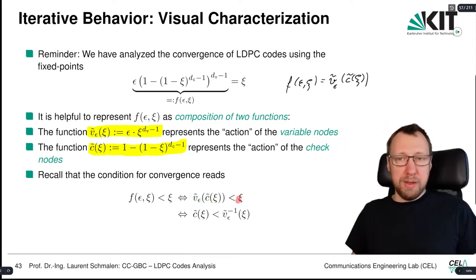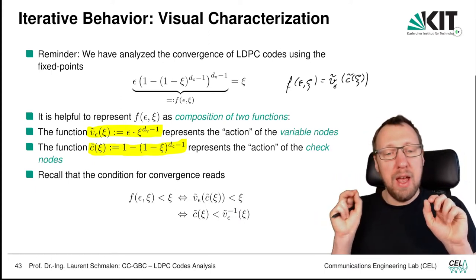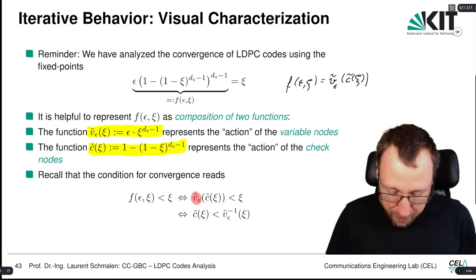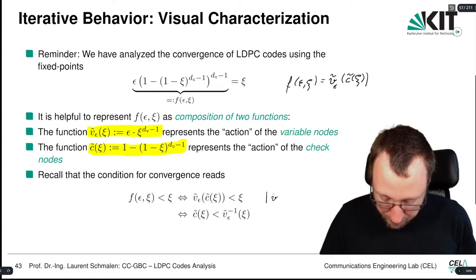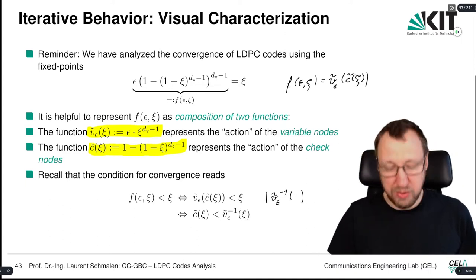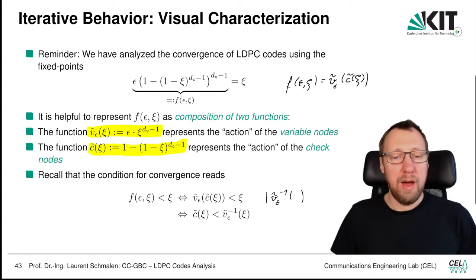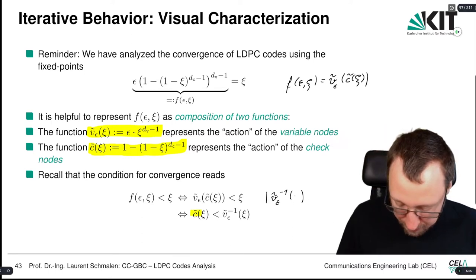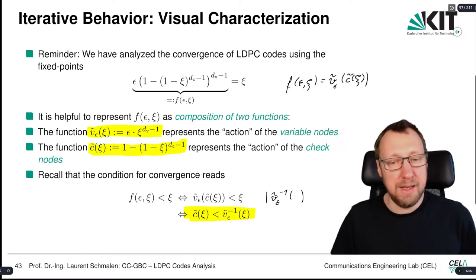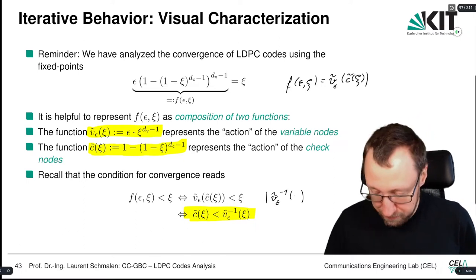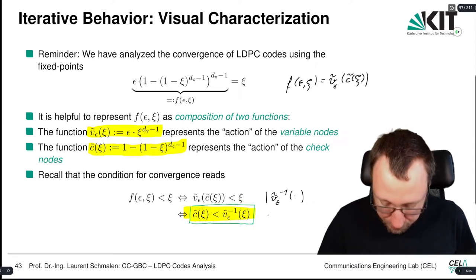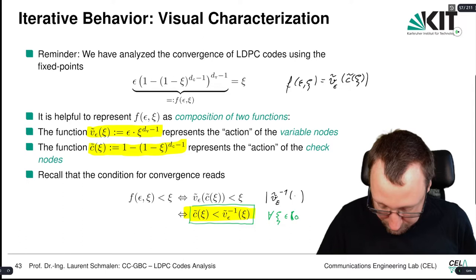We separate this composed function into a variable node part and a check node part by taking the inverse of Ṽ_ε on both sides. This gives the equivalent convergence condition: C̃(ξ) < Ṽ_ε^(−1)(ξ), which should hold for any ξ between 0 and 1.